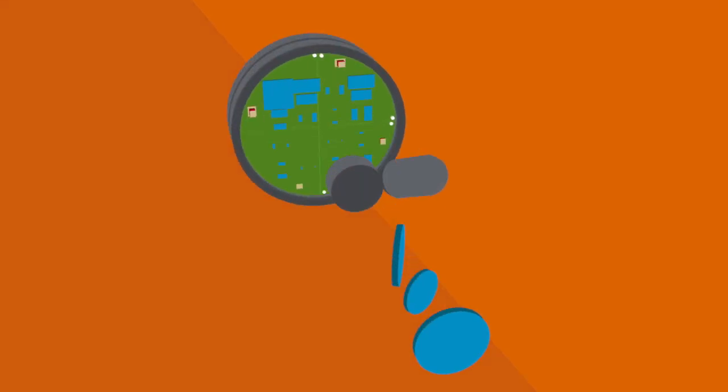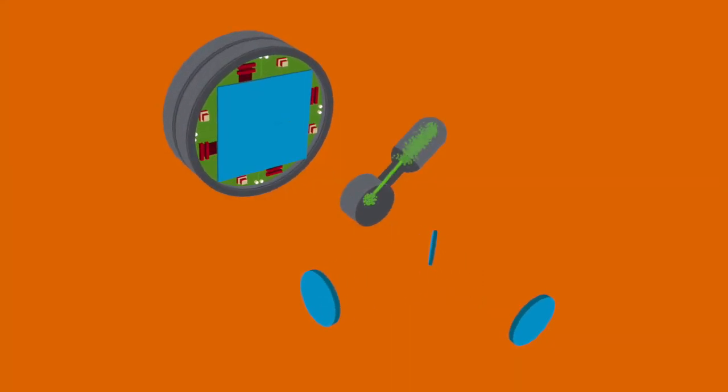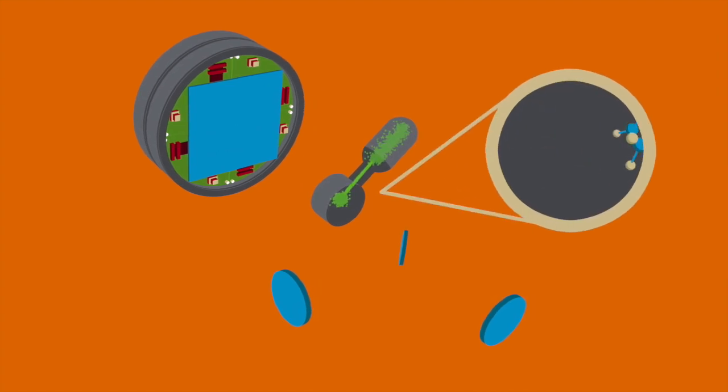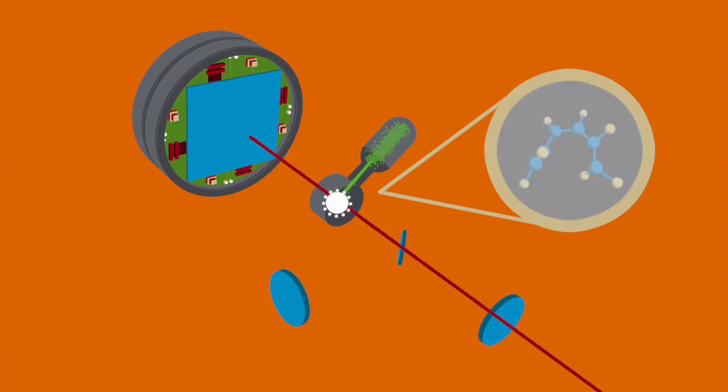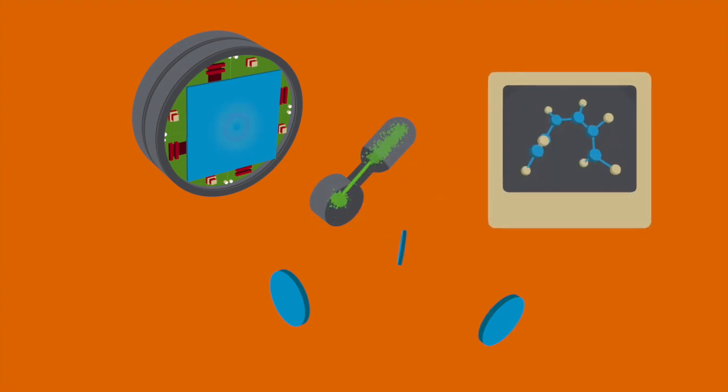Most molecular movies are made using a pump probe technique involving two energetic pulses. The first pulse is the pump and kicks off the reaction being studied. A precisely delayed probe pulse creates a snapshot.